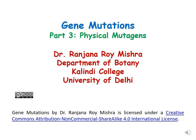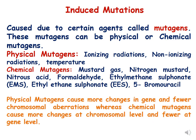Hello dear students. This is part 3 of the lecture series on gene mutations, and in this lecture we will be discussing induced mutations. Induced mutations are caused due to certain agents called mutagens, and these mutagens can be physical or chemical agents.